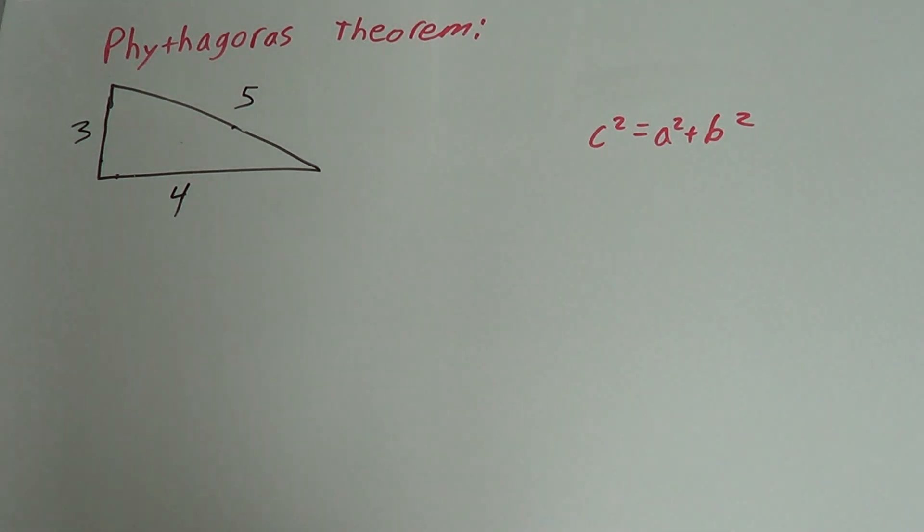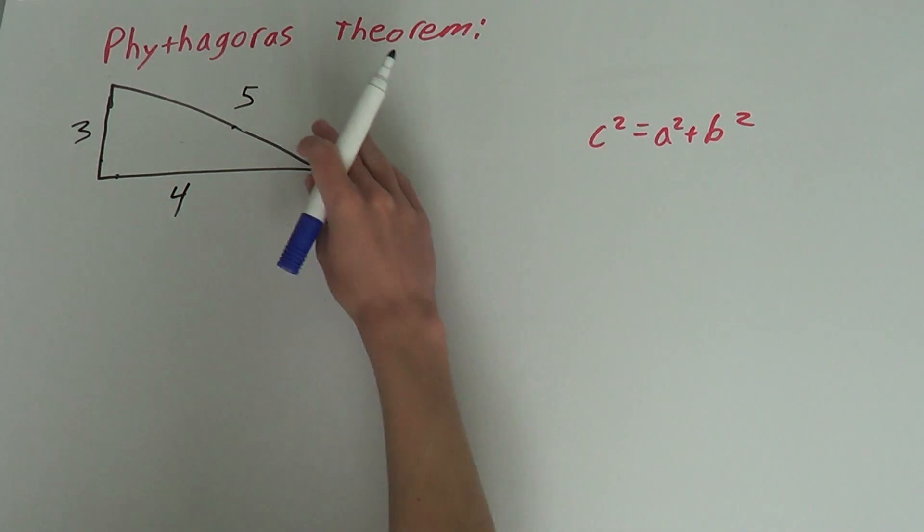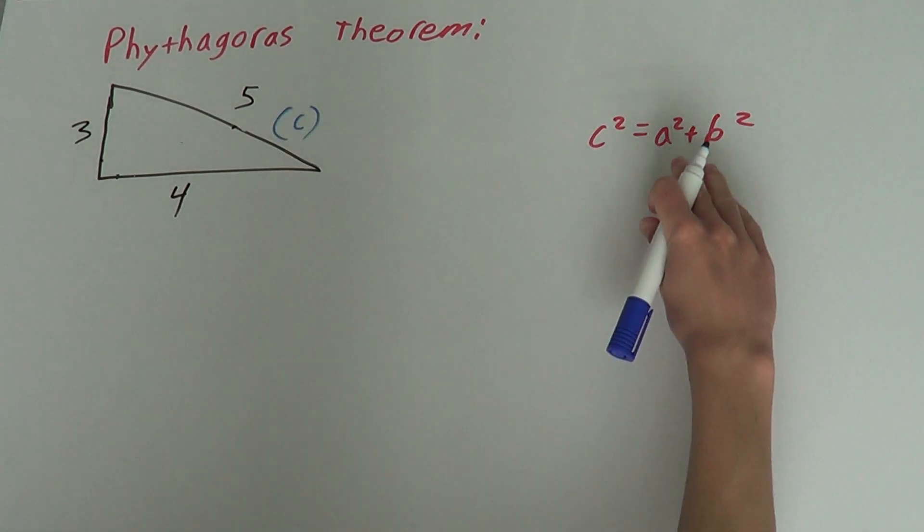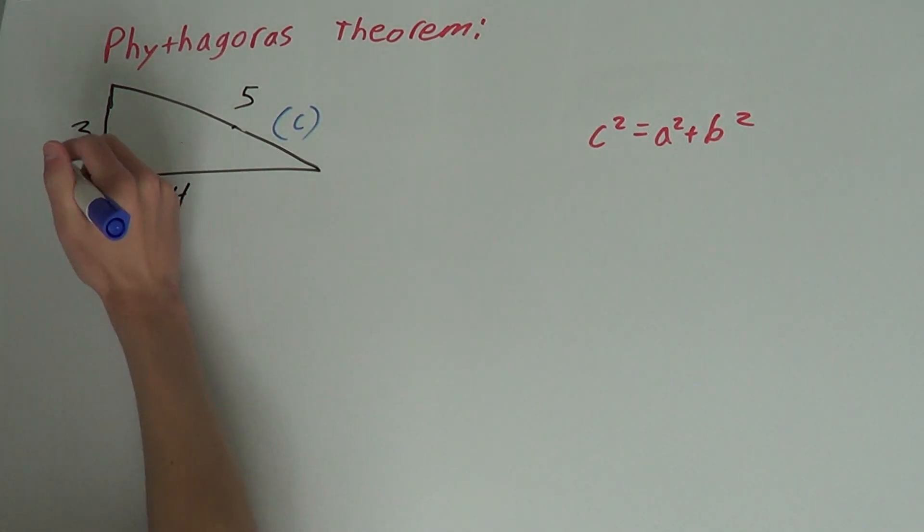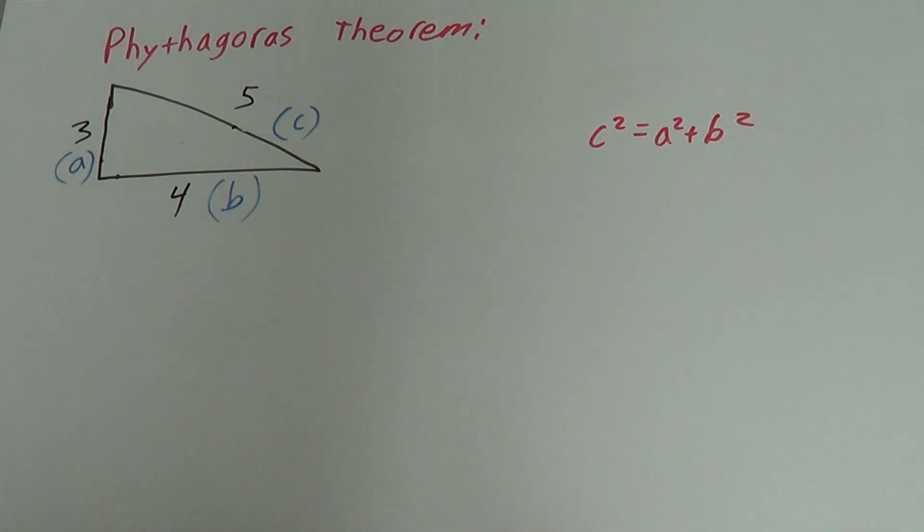So, what does this formula mean? Each of the letters in the formula represent a side of the triangle. c represents the hypotenuse. a and b don't really matter, but generally a represents the shorter side and b the second longest. Once we have that, we just solve for this equation.